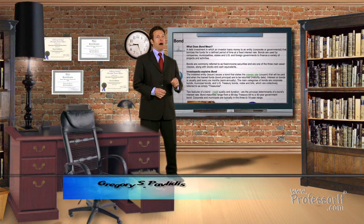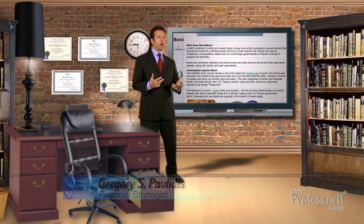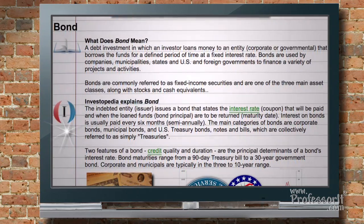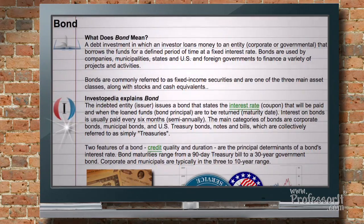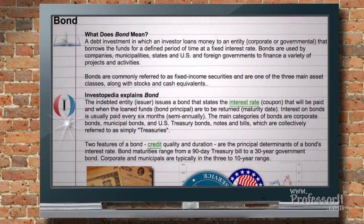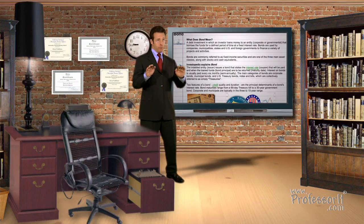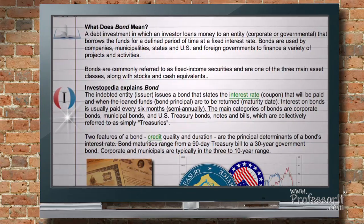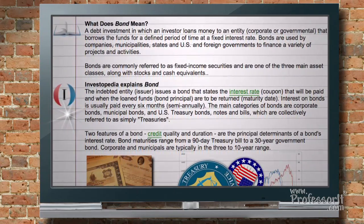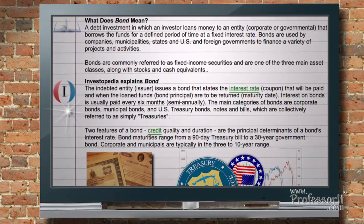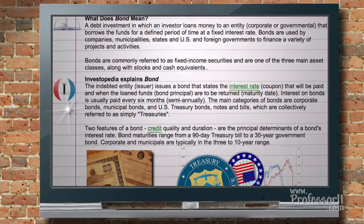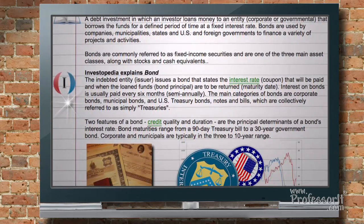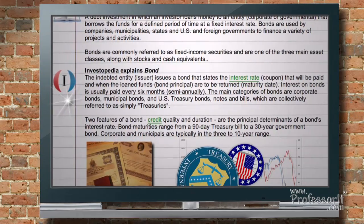Investopedia explains bond as the indebted entity — the issuer or borrower — issues a bond that states the interest rate, or coupon, that will be paid and when the loaned funds, or bond principal, are to be returned, known as the maturity date. Interest on bonds is usually paid every six months, or semi-annually. The main categories of bonds are corporate bonds, municipal bonds, and US treasury bonds, notes and bills, which are collectively referred to as simply treasuries.